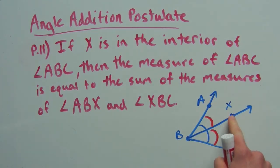So ABX plus XBC equals the measure of angle ABC. And we're going to use this postulate, the angle addition postulate, to prove the linear pair theorem.